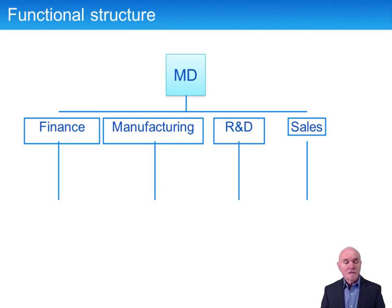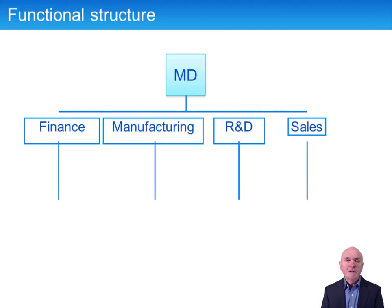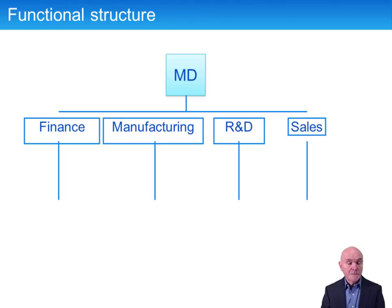The first structure we deal with here is what's called the functional structure. This is the simplest structure, and most businesses, as soon as you begin to get any size at all, begin to evolve into this sort of structure. You have it arranged so that each function has a whole department — the finance department, the manufacturing department, the sales department, and so on.